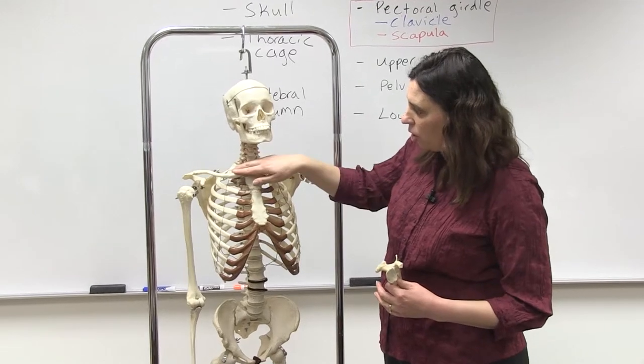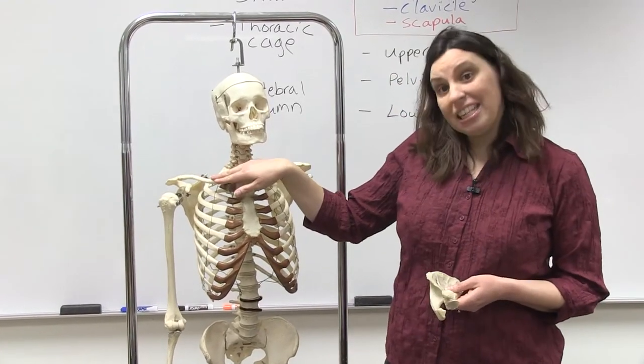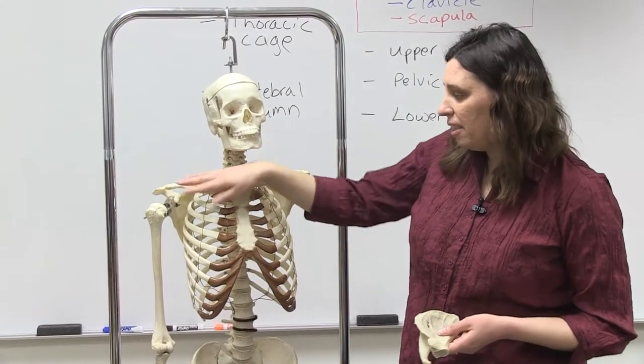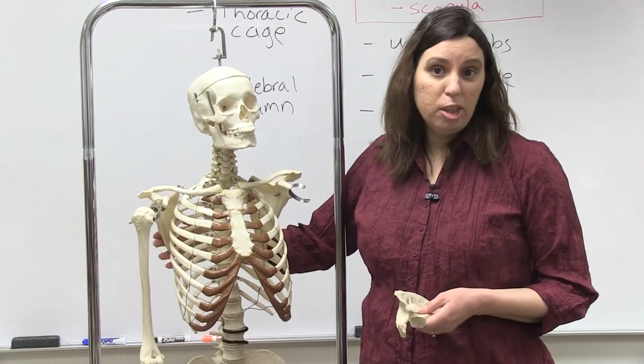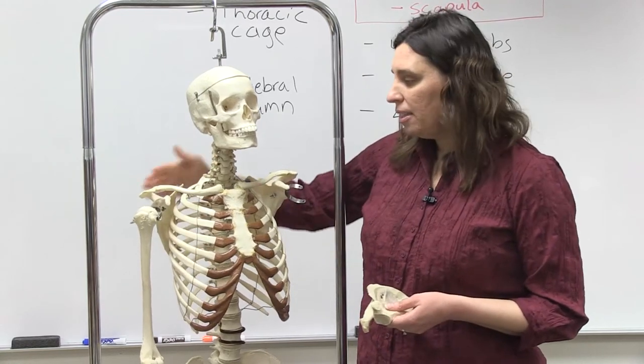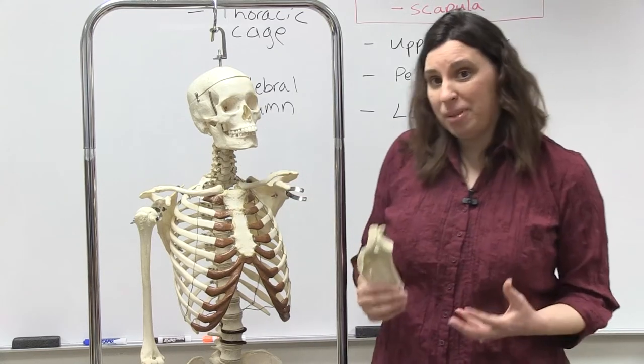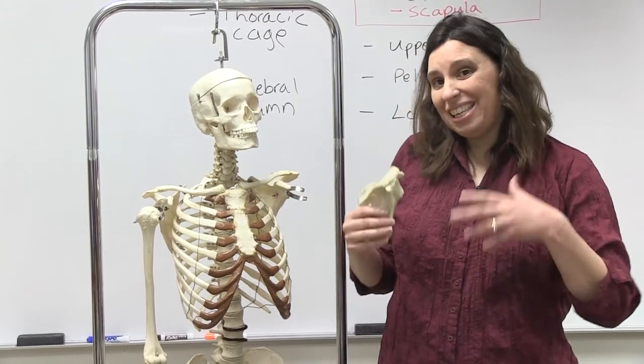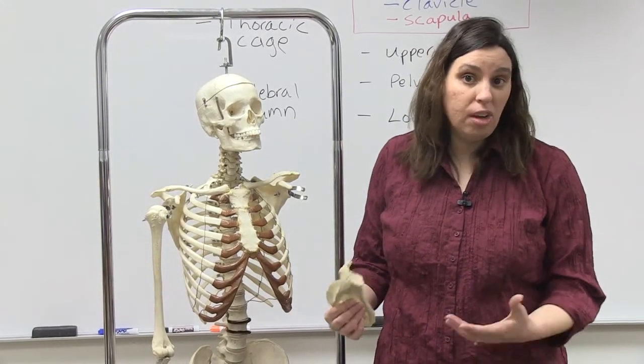It consists of the clavicle, and you can kind of see that the clavicle is mostly in the anterior side of the skeletal system, and then essentially the scapula, which is on the posterior side of the skeletal system. One other thing to remember about the appendicular skeletal system is that there are two of each of these bones because essentially you have two upper limbs and you have two lower limbs.